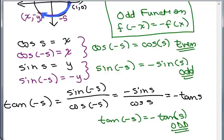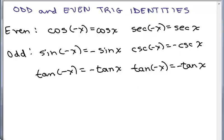So what we have is: cosine is the even function, and by the way, secant — its reciprocal — will also be even. Sine and tangent are odd functions, and similarly, cosecant (the reciprocal for sine) and cotangent (the reciprocal for tangent) will also be the odd functions. These are called the odd and even trig identities and are considered part of the basic identities. The even functions are cosine and secant, and the odd functions are sine, cosecant, tangent, and cotangent.